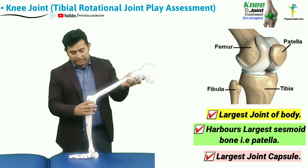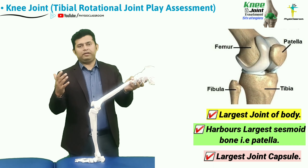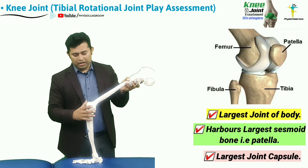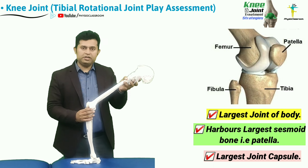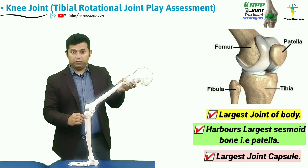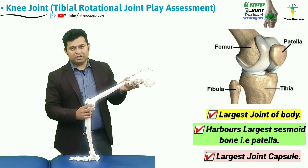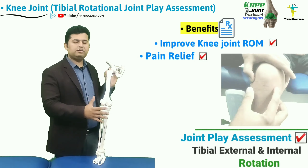For physiotherapy students, the knee joint is not only the largest joint of the human body, but there are other interesting facts. This joint is formed by the articulation of the two largest bones of the human body, which are the femur and the tibia. The knee joint also harbors the largest sesamoid bone, which is the patella, and has the largest joint cavity and joint capsule.